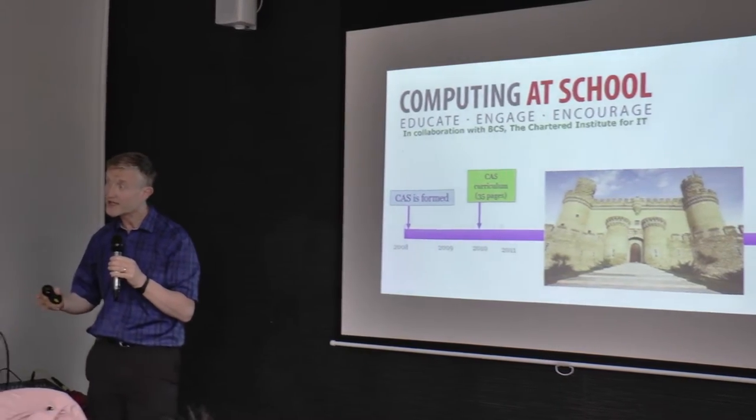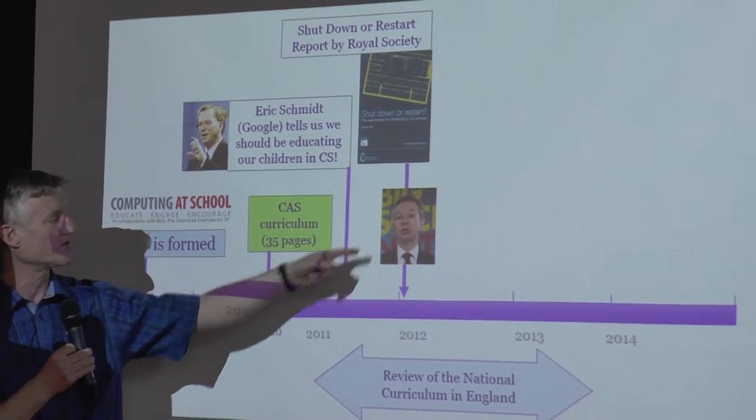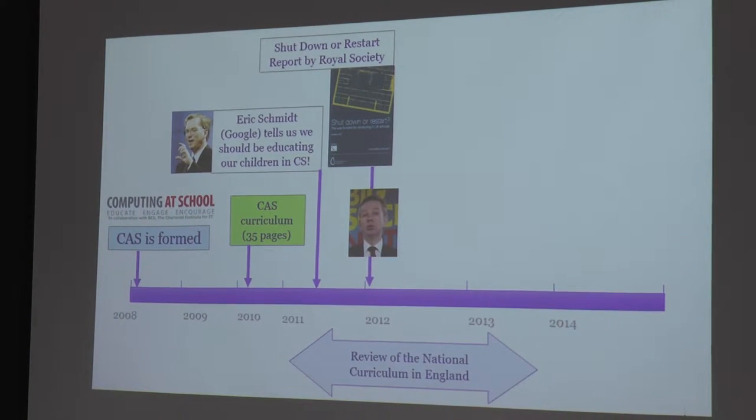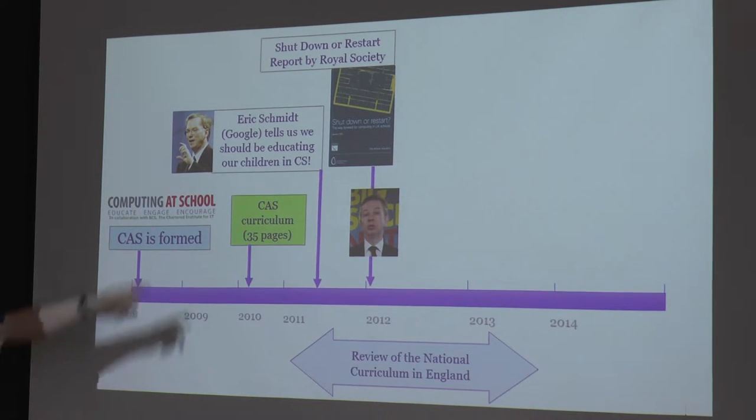One of the first things we did was write a curriculum — trying to articulate what we thought should be taught in school computing. This is about 35 pages long. We wrote it with teachers and tried hard to write it in language teachers would understand — what computer science thought of as a school subject, rather than as a university subject, might look like. At that stage we had no customers for this; it was just something we did to keep ourselves honest. Then there was a series of breakthroughs. There was a change of government, and Michael Gove instituted a review of the whole national curriculum, which meant there was suddenly motion in the system.